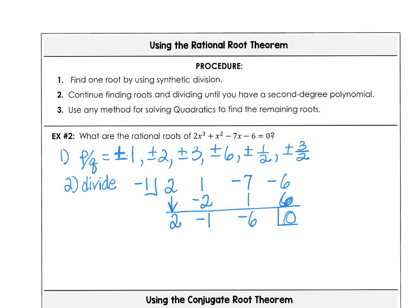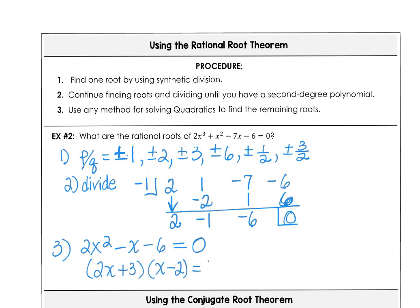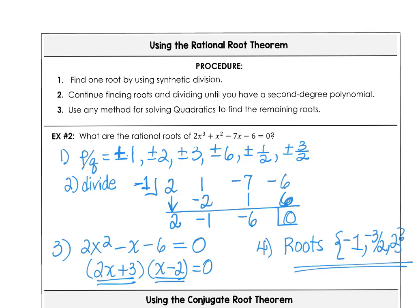Next, I take the quotient 2x²−x−6 and solve that quadratic by factoring. I can factor it as (2x+3)(x−2), which gives zeros at x = −3/2 and x = 2. So all roots of the polynomial are x = −1, x = −3/2, and x = 2. We have 3 roots for a cubic polynomial, and all roots are rational.